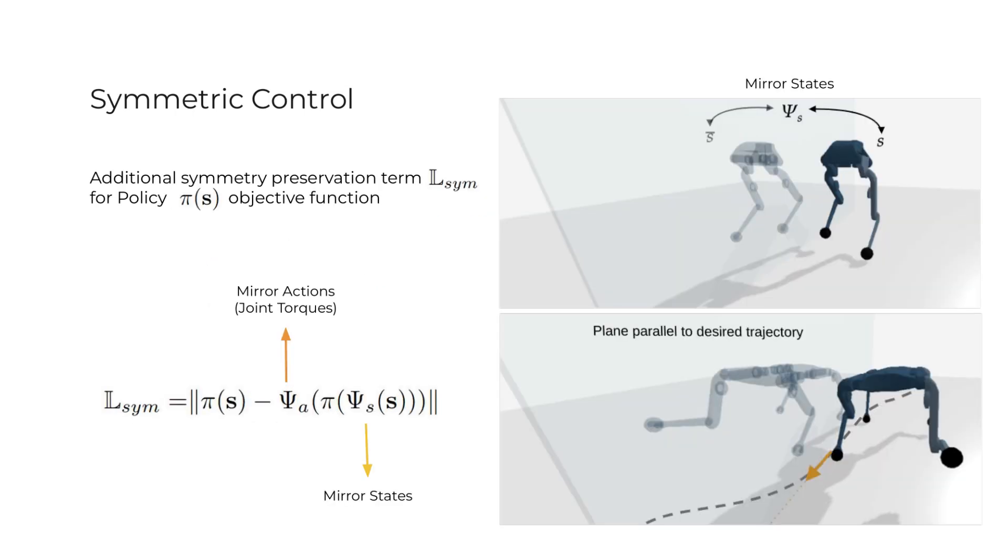We also found that in order to ensure the convergence to realistic behaviors, we needed to encourage the control policy to be symmetric, exploiting the symmetries of the morphology of the robot and the learning task.